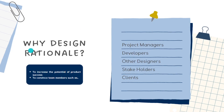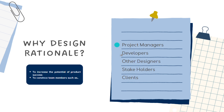Why are we using Design Rational? What's the purpose of using it? Basically, Design Rational helps ensure that UX designers are being intentional with all of their reactions and decisions, which can further increase the potential of product success. Secondly, it also aims to convince team members such as project managers, developers, other designers, stakeholders, and clients.